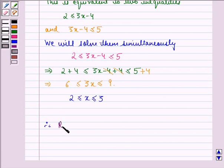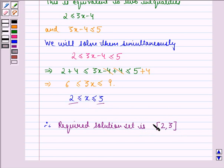Therefore, the required solution set is the closed interval [2, 3], where 2 and 3 are included because we have an equality sign. 2 is less than or equal to x is less than or equal to 3, so 2 and 3 are included and this becomes a closed interval.